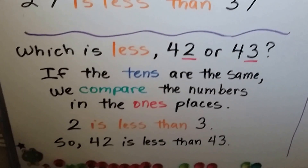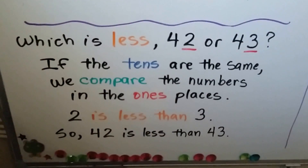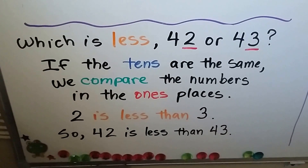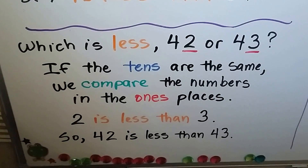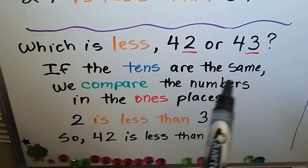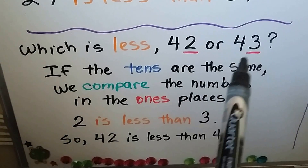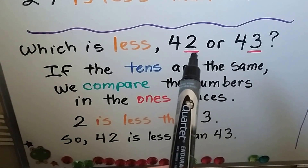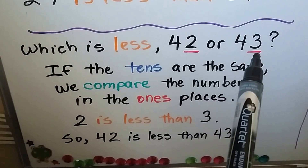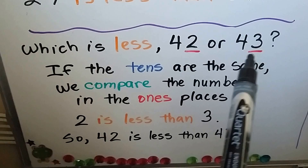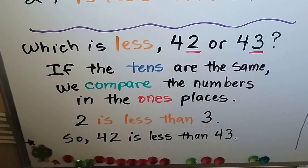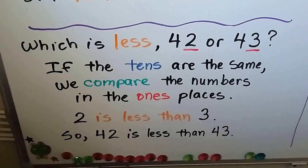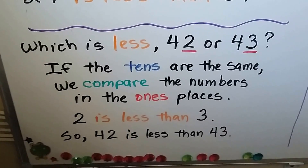Which is less: forty-two or forty-three? If the tens are the same, we compare the numbers in the ones place. They both have a four in the tens place, so we compare the ones place. This only has two ones, this one has three ones. Two is less than three, so forty-two is less than forty-three.